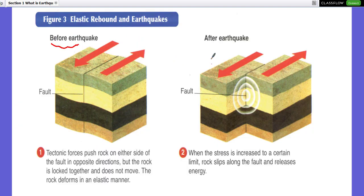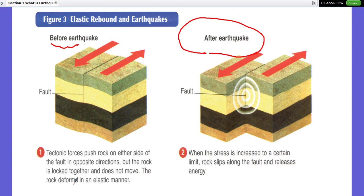Let's look at before and after an earthquake. Before the earthquake, tectonic forces push and pull rock on either side of the fault in opposite directions, but there is not enough force to move it — the rock is locked together and does not move, so there is no earthquake. When stress increases past a certain limit, the rock slips along the fault, releasing energy, and the crust layer moves horizontally, causing an earthquake.